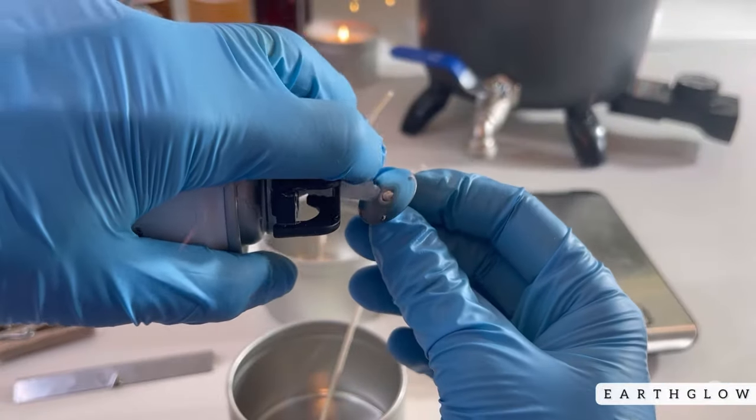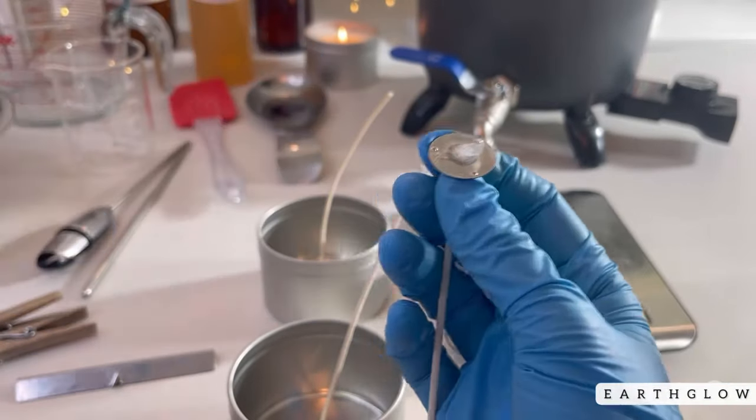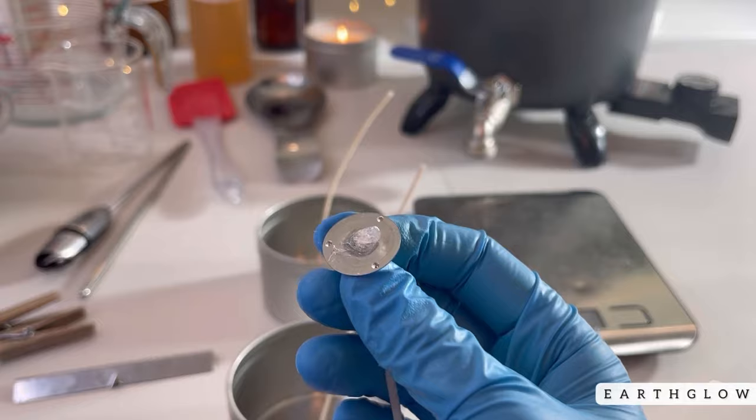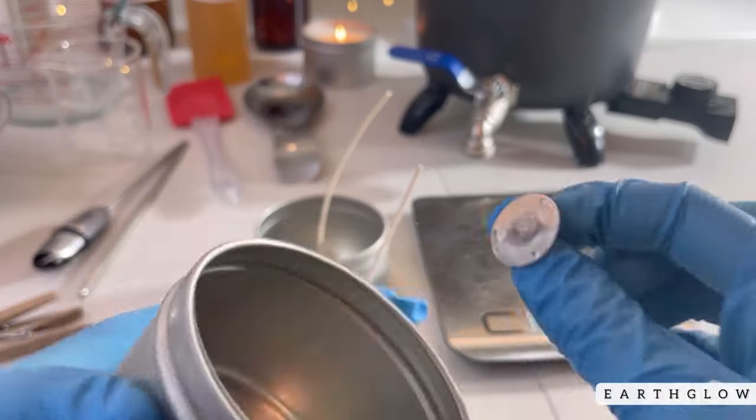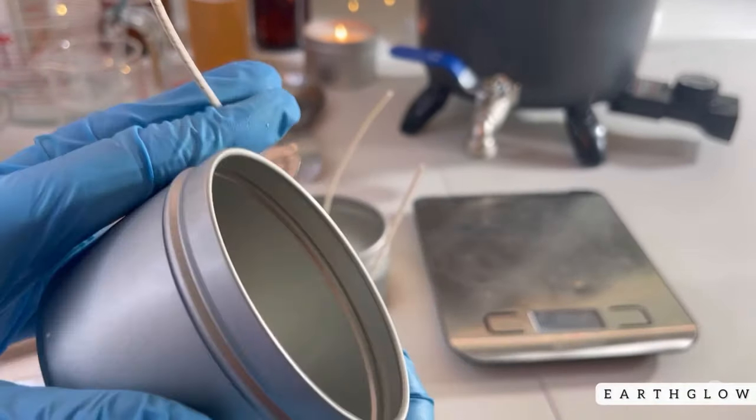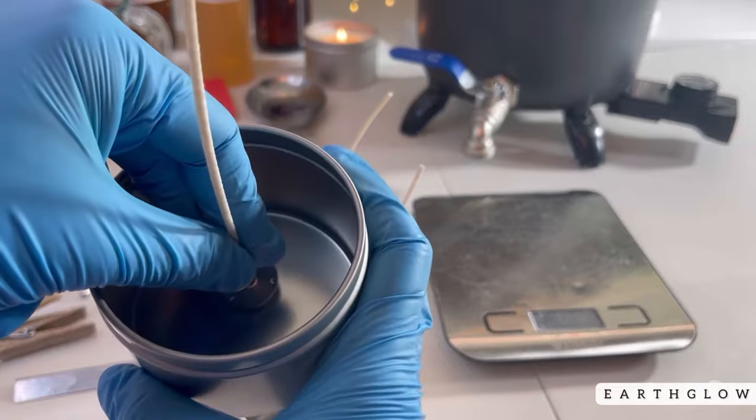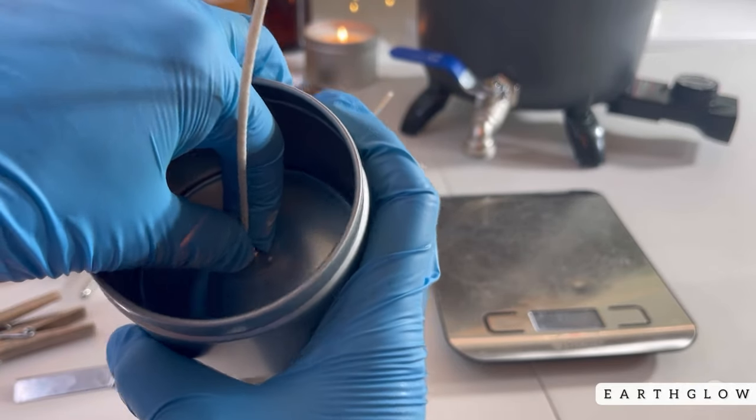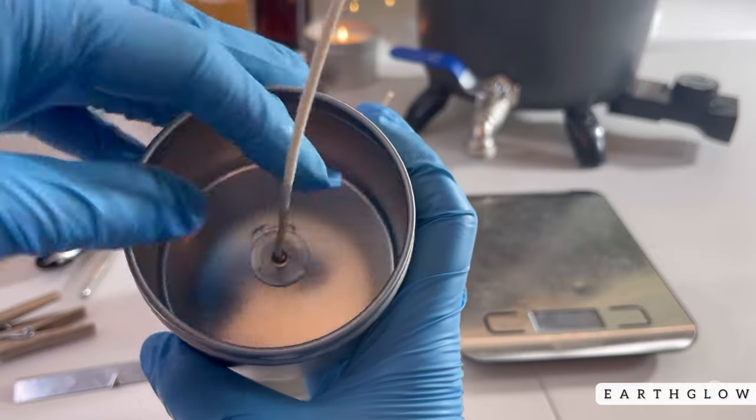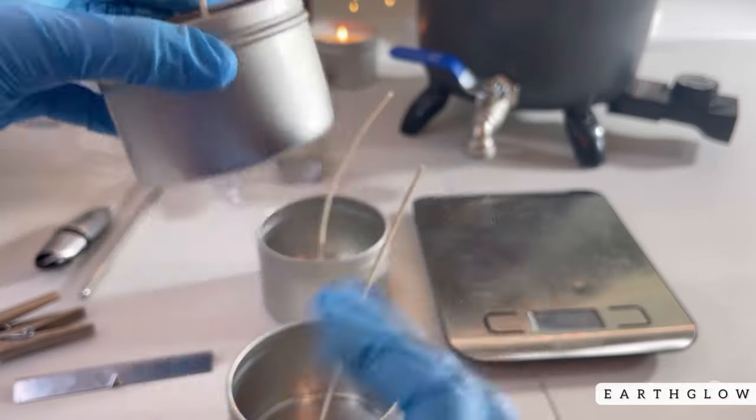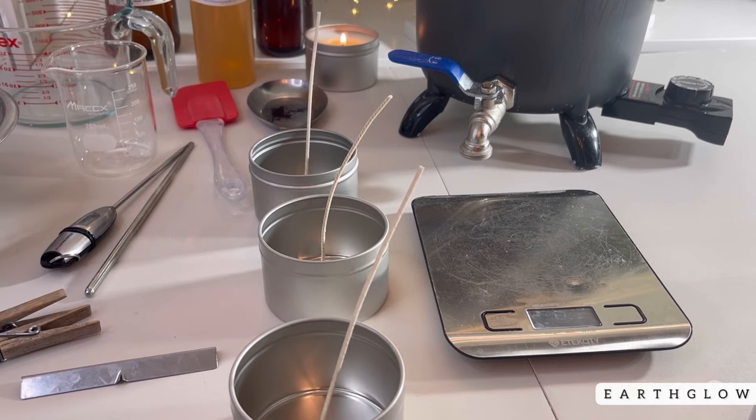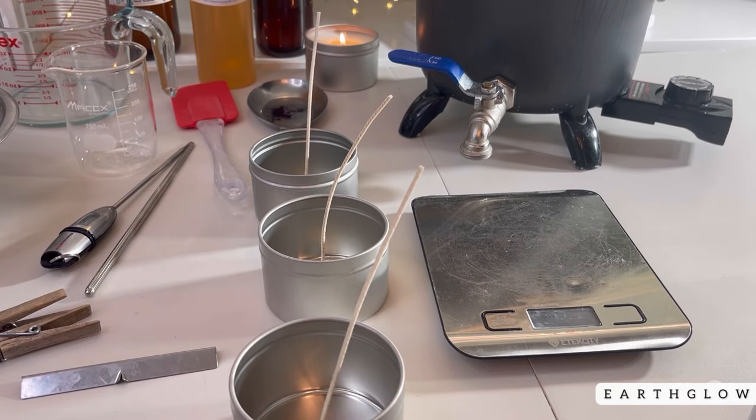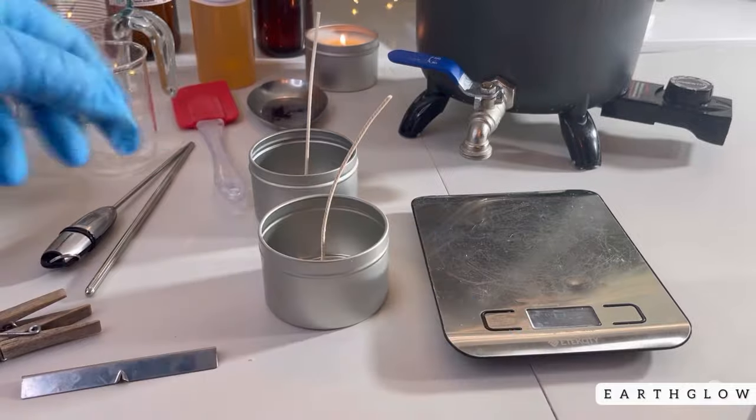These vessels you'll notice too have some imperfections and I always separate those out that do have imperfections from my suppliers so that I don't make and sell a candle to my customers that has a dent or something. Okay so the next step is to put these off to the side and we're going to get our wax melted.